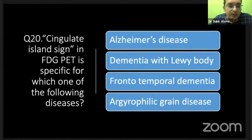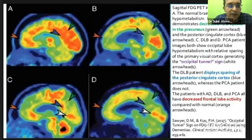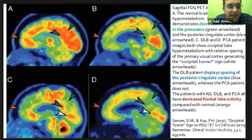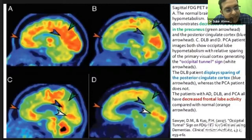The cingulate island sign refers to preservation of the cingulate gyrus — the medial part — on FDG PET. In normal brain, the cingulate area shows normal uptake. In Alzheimer's disease, there is decreased uptake in surrounding areas, but this island — the cingulate gyrus region — is spared in dementia with Lewy body. This spared island is called the cingulate island sign on FDG PET.